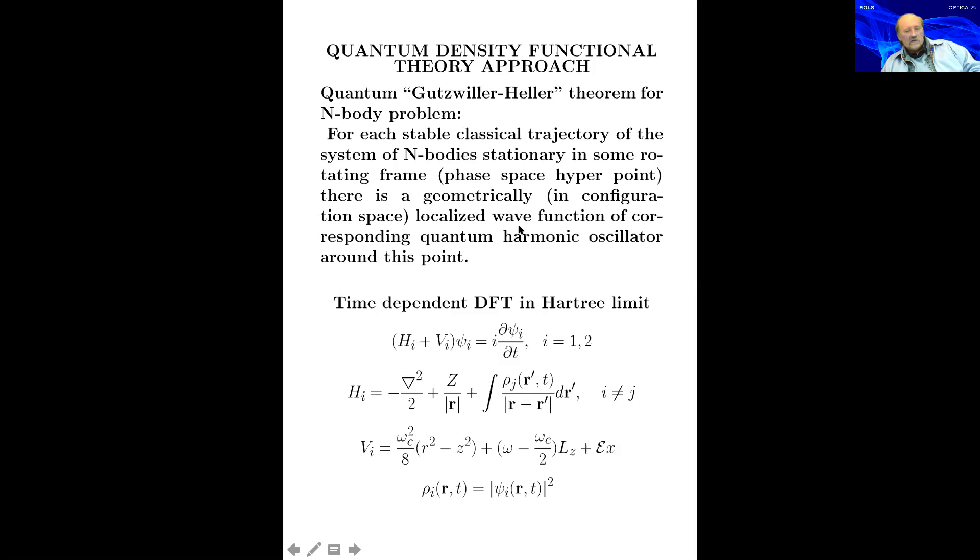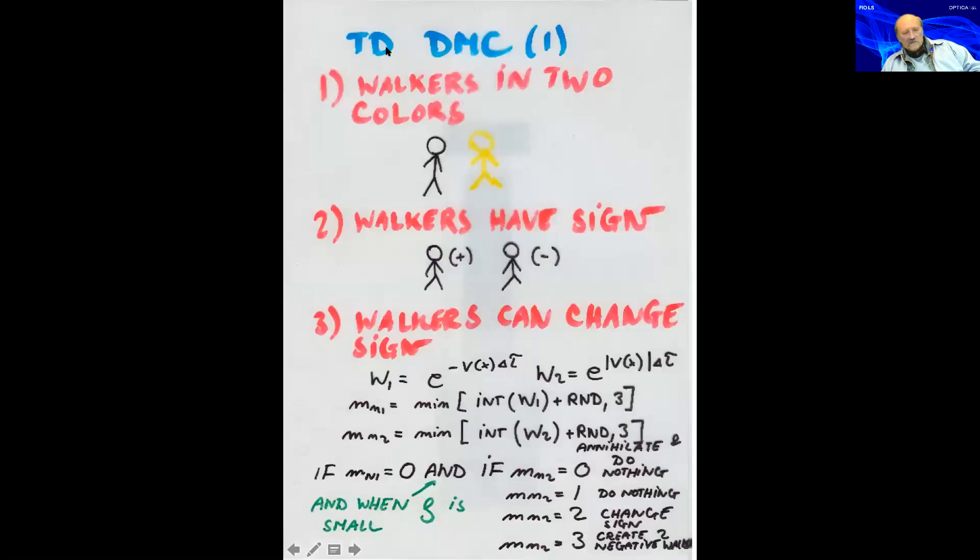If there is motion in the rotating frame, then the packet will oscillate slightly, but it will still stay dispersed. You can do quantum simulations with density functional theory in Hartree limit that each electron is experiencing the effective electric field of all the other electrons. This is written for two, but you can do the same way for arbitrary number of electrons. You can also do the time-dependent Monte Carlo simulations.